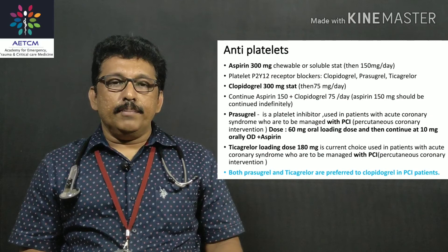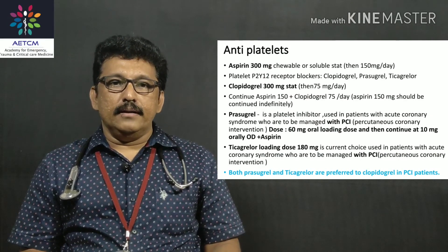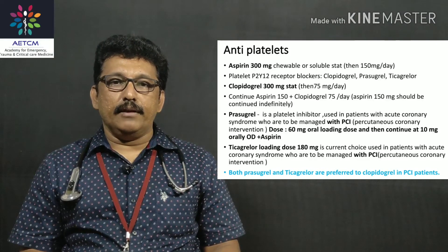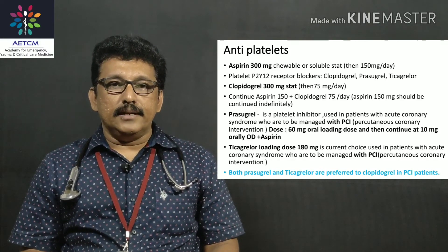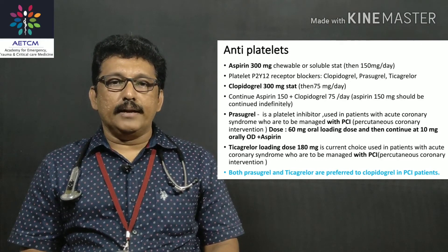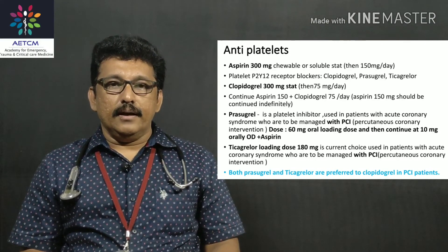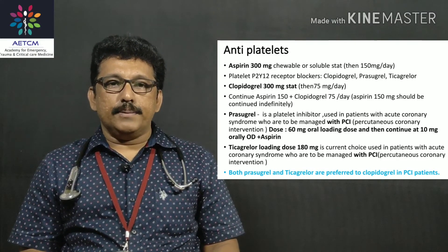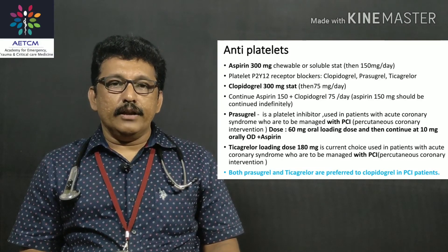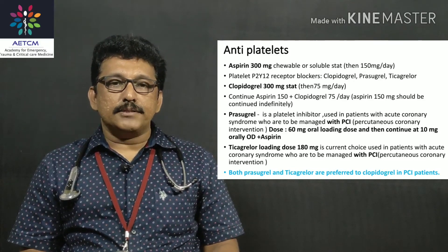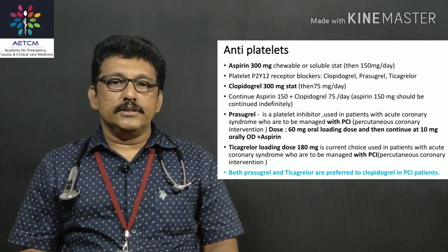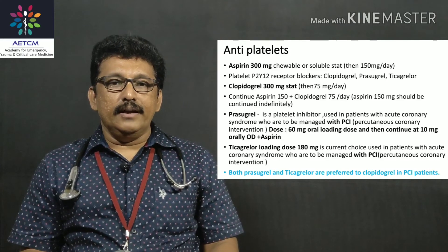After morphine, start antiplatelets. Aspirin — as a chewable or soluble tablet — is given 300 mg as loading dose, then 150 mg per day. Coated tablets like ecospirin are not indicated. Clopidogrel is given 300 mg loading dose and 75 mg per day to be continued. So 300 mg aspirin plus 300 mg clopidogrel as loading, then 150 mg aspirin and 75 mg clopidogrel continued indefinitely.